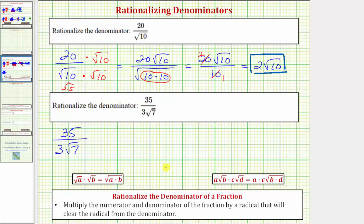Again, the first thing to recognize is that the denominator is irrational because the square root of seven does not simplify perfectly. Therefore, to eliminate the square root of seven from the denominator, we need to recognize it would have to have two factors of seven under the square root, which means to rationalize the denominator, we multiply the numerator and the denominator by the square root of seven.